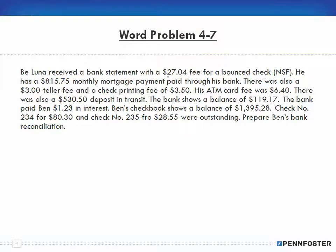Next, problem 4-7. Ben Luna received a bank statement with a $27.04 fee for a returned check (NSF charge). He had an $815.75 monthly mortgage payment paid through his bank, a $3.00 teller fee, and a check printing fee of $3.50. His ATM card fee was $6.40. There's also a $530.50 deposit in transit. The bank shows a balance of $119.17 and paid Ben $1.23 in interest. Ben's checkbook shows $1,395.28, with outstanding checks: check 234 for $80.30 and check 235 for $28.55.